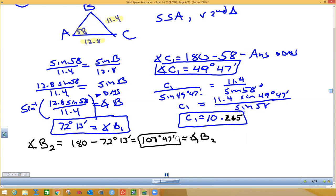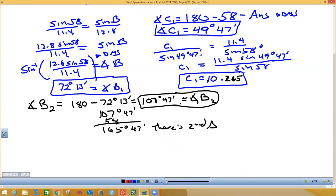Now what do I do to see if it works? What do I do with this second angle? I add the given angle they gave me, 58. When I add those two together, I get this. What is that compared to 180? Is there a second triangle? Yes, there is. There's a second triangle.